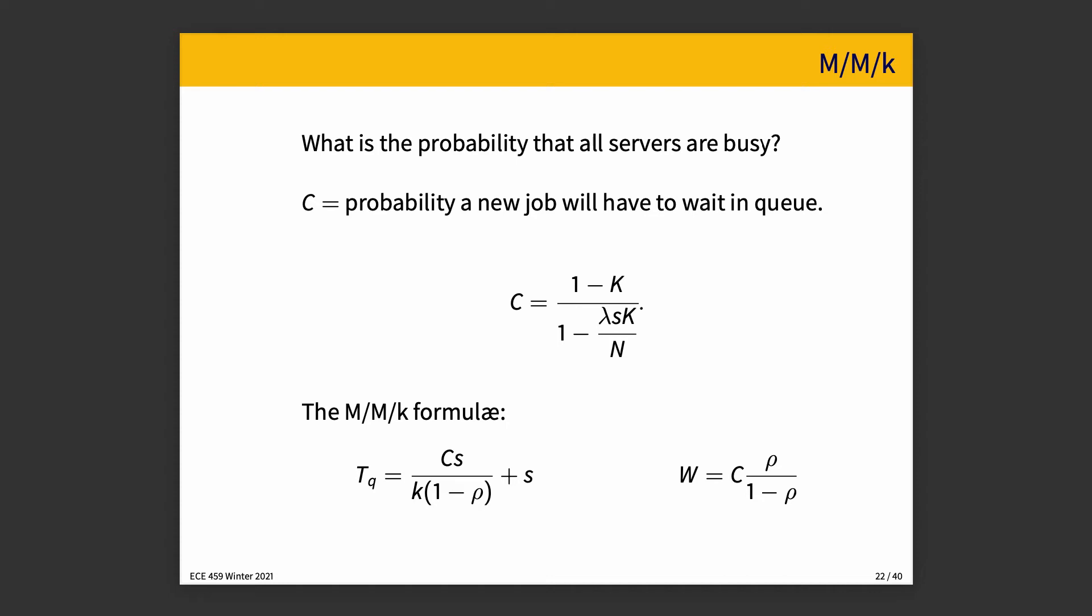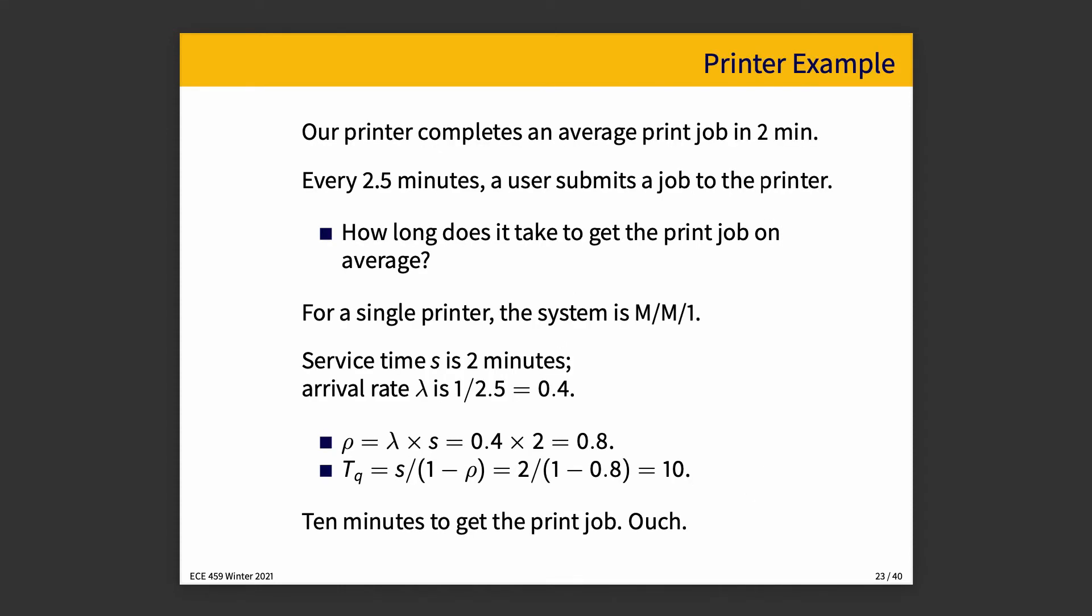If C is zero, nobody has to do any waiting. The length of the queue will also be zero, and that makes sense. If we are certain that we're going to have to wait, it doesn't mean the length of the queue is infinite, but there is a danger, as it depends what our utilization is.